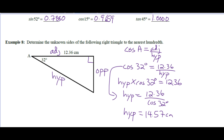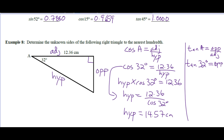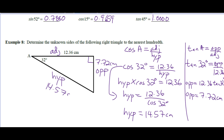To work out the opposite side, avoid using the calculated number. We have adjacent and 32 degrees, so tangent is opposite over adjacent. Tan 32° equals opposite over 12.36. Multiply both sides by 12.36: opposite is 12.36 times tan 32°, which is 7.72 centimeters. So the opposite side is 7.72 centimeters and the hypotenuse is 14.57 centimeters.